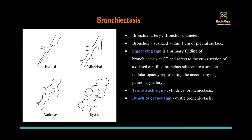The next sign is the signet ring sign — imagine a wedding ring or engagement ring; the large bronchus with the adjacent smaller pulmonary artery, which is nodular, gives rise to this sign. Tram track sign: dilated cylindrical bronchi cut in section appear like a tram track — similar to railway tracks. Bunch of grapes refers to cystic bronchiectasis, where the dilated bronchi appear similar to a bunch of grapes.